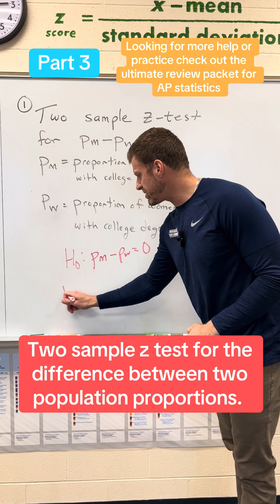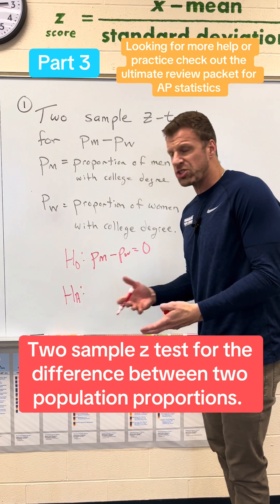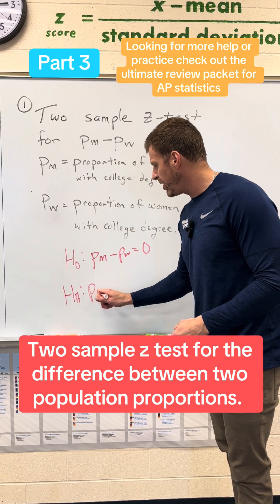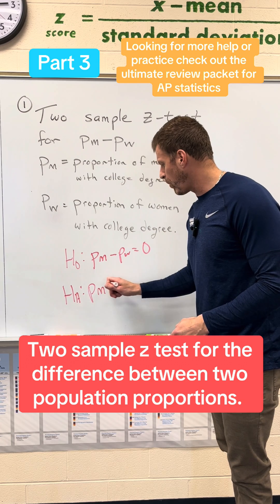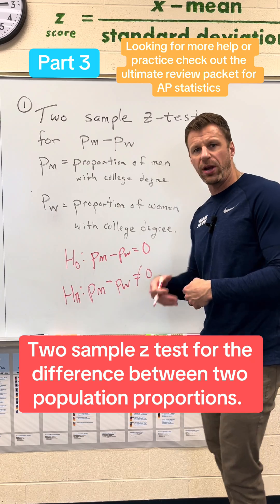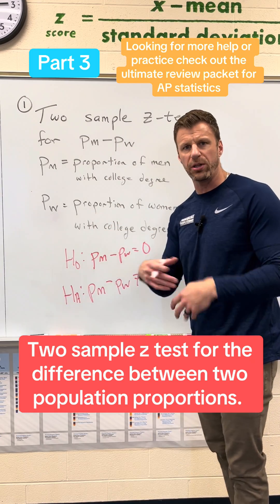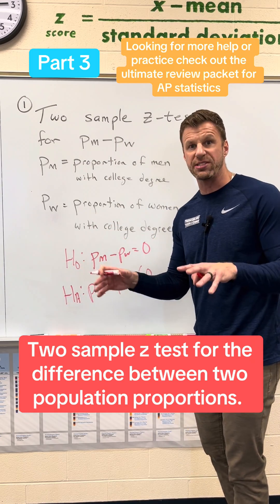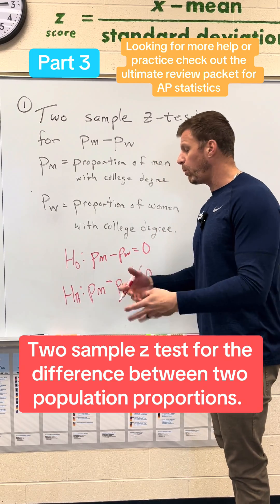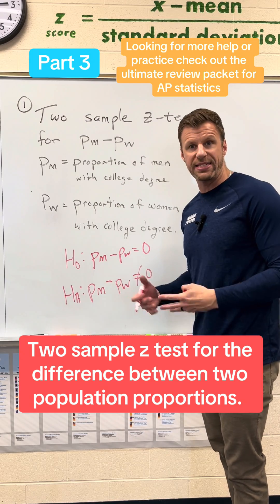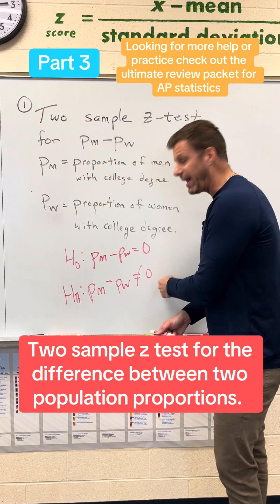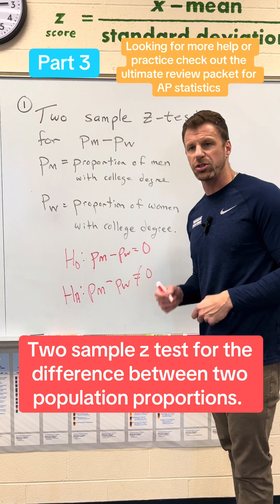The alternative would be that we hope to show evidence that there is, in fact, a difference. So that would be that the proportion of M minus the proportion of W does not equal zero. We don't necessarily care that men are more or women are less — the question never said that. It could have, which would allow us to use a greater-than or less-than sign. But what we care about is simply: is there a difference? If these are different, we're going to get a non-zero difference.